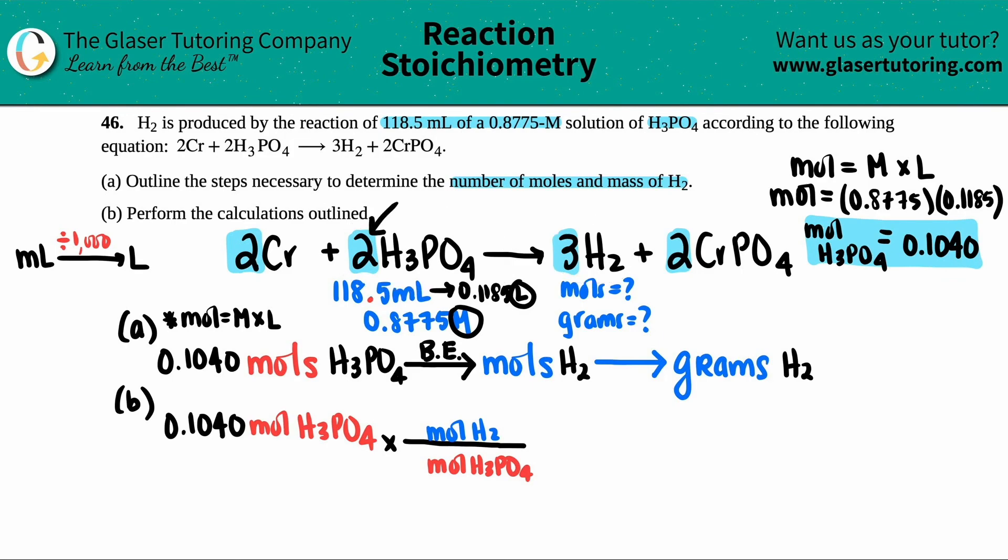All we're doing is we're just looking at the coefficients that are in the front of the molecule. I specifically only care about H2 and H3PO4. For every two H3PO4s, I will produce three H2s. So there's a two in front of H3PO4. There's a three in H2. I'm going to put a three here. And that step's done. Now cancel out your units. Anything in the denominator, I will divide. Anything in the numerator, I will multiply. So I'm going to say 0.104 times three divided by two.